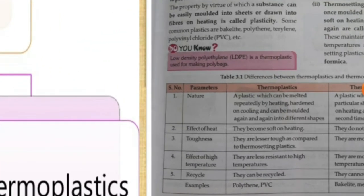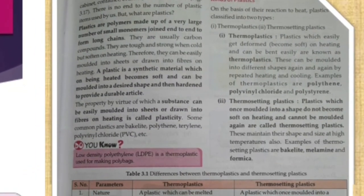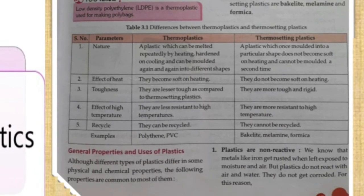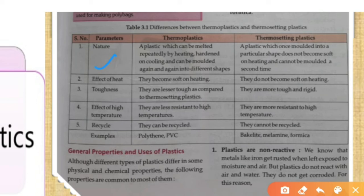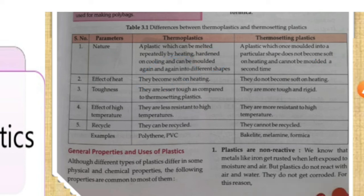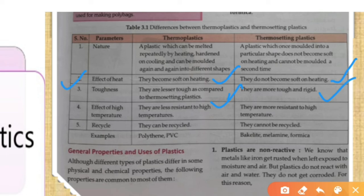The difference between them is very important. Thermoplastic: can be melted repeatedly by heating and cooling and can be molded again and again. Thermosetting plastic: cannot be softened after one heating. Effect of heat: thermoplastic becomes soft on heating; thermosetting plastic does not become softer on heating. Toughness: thermoplastics are less tough compared to thermosetting plastics, which are more tough and rigid.